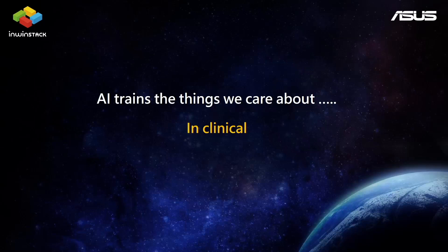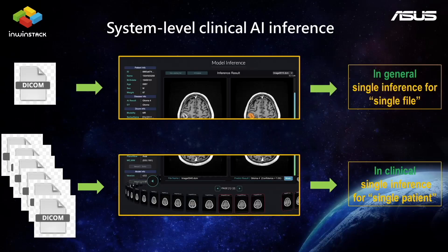How about model training in clinical? What are the things we care about? Normally in medical imaging, we train the data frame by frame — meaning no matter whether the training model is for classification or segmentation, we always check the result by single image for calculation.